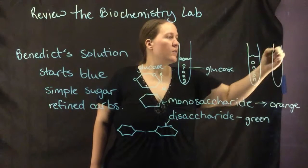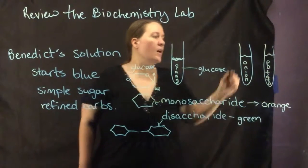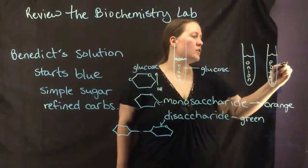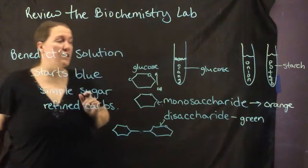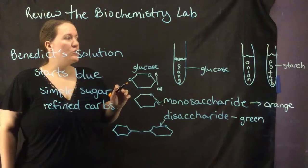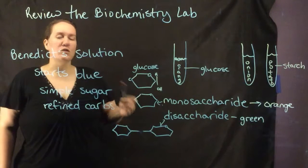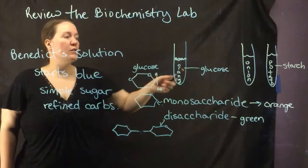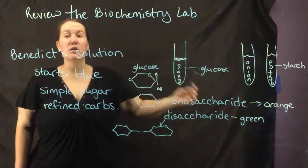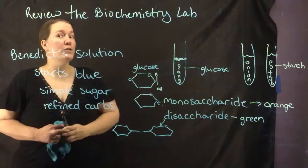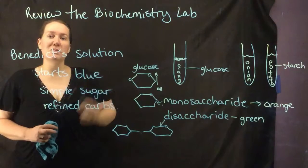A lot of people said that the potato was positive, and potato is actually starch. Sugar comes in long, long chains. Starch is not a simple sugar, so it shouldn't have come back positive. It should have just been the glucose - it's orange - and then the onion should have been your other positive result. So hopefully that makes sense, that the Benedict test is for simple sugars.